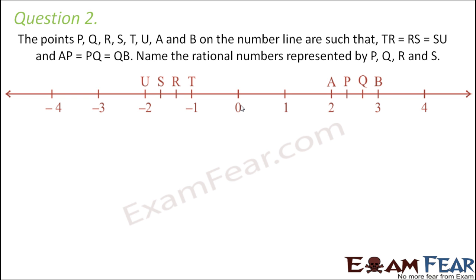Question number 2. The points P, Q, R, S, T, U, A and B on the number line are such that TR is equal to RS is equal to SU, and AP is equal to PQ is equal to QB. Name the rational numbers represented by P, Q and S.